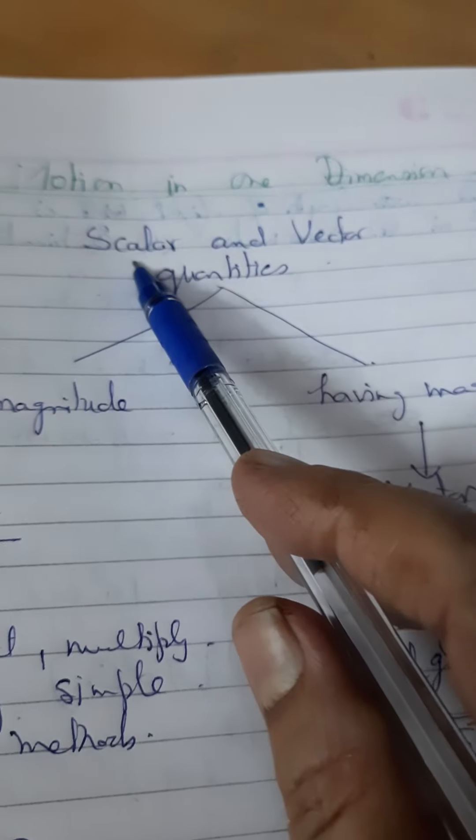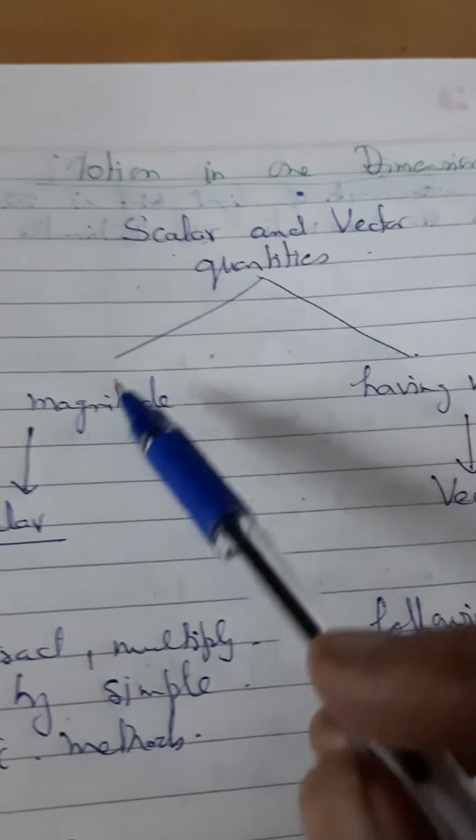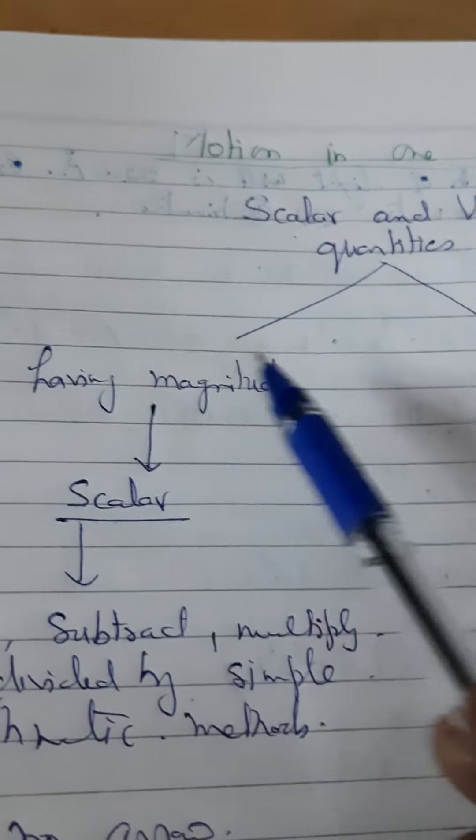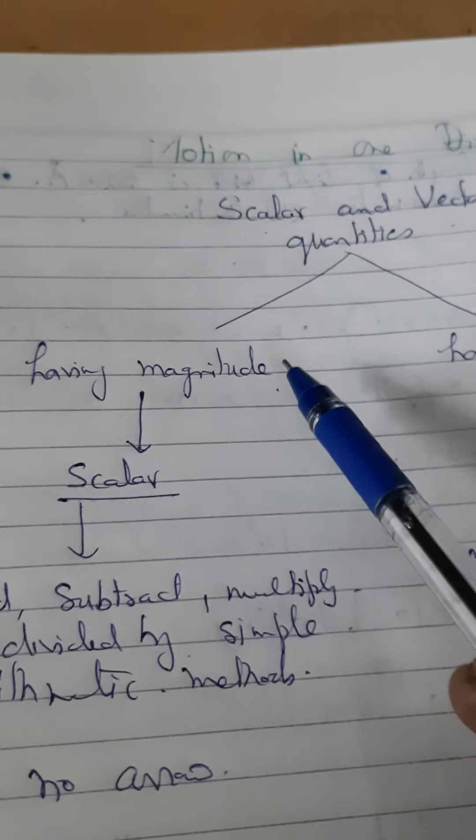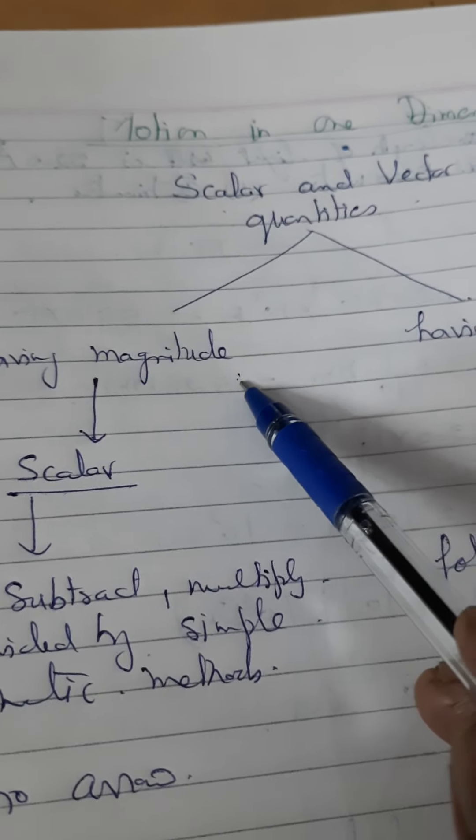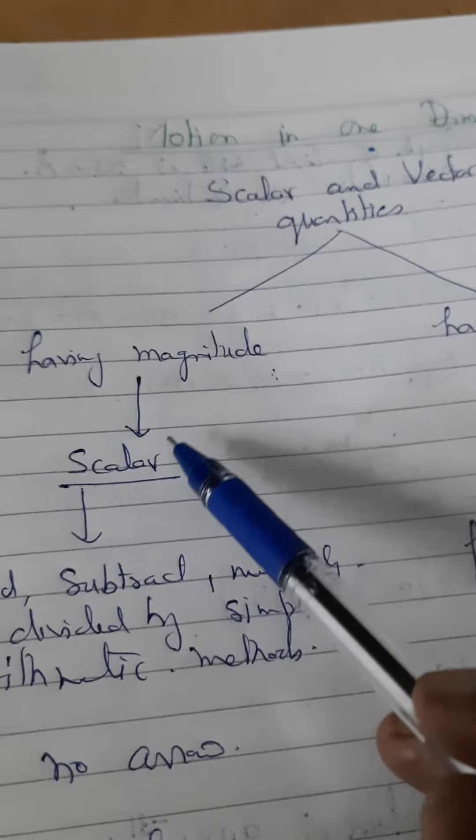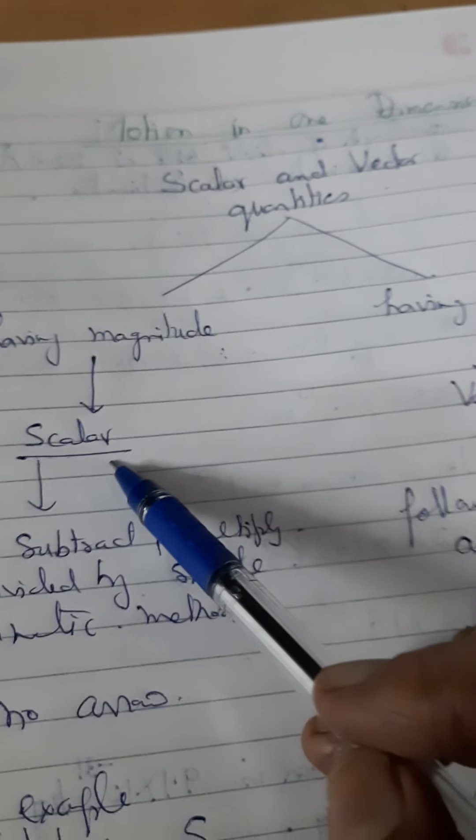One is known as scalar and another is known as vector quantities. Those quantities having only magnitude, suppose 2 kg, distance 5 meter, they are only telling about the result. They are not telling about any direction. Such type quantities are known as scalar quantities.